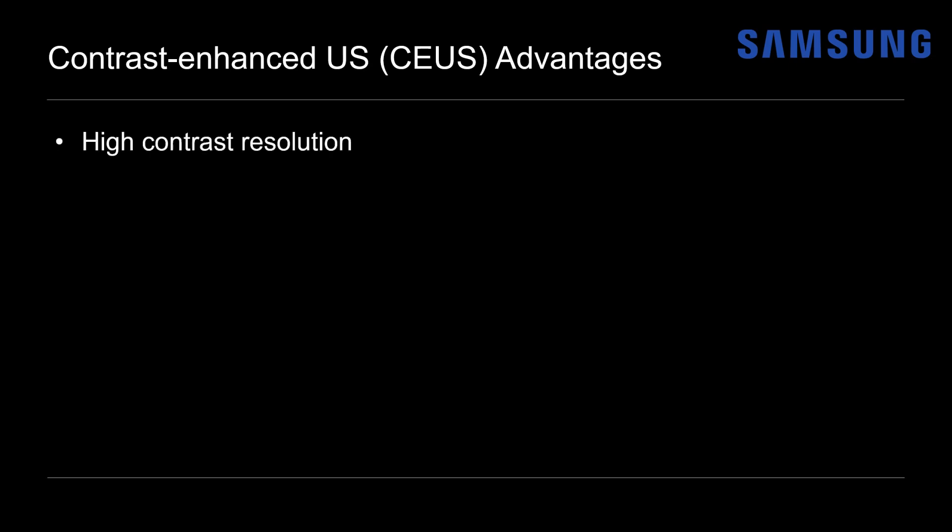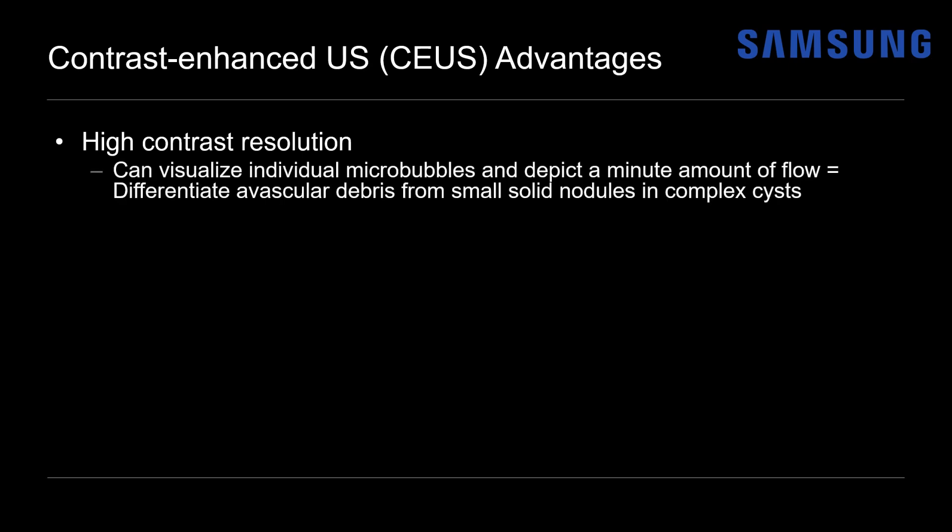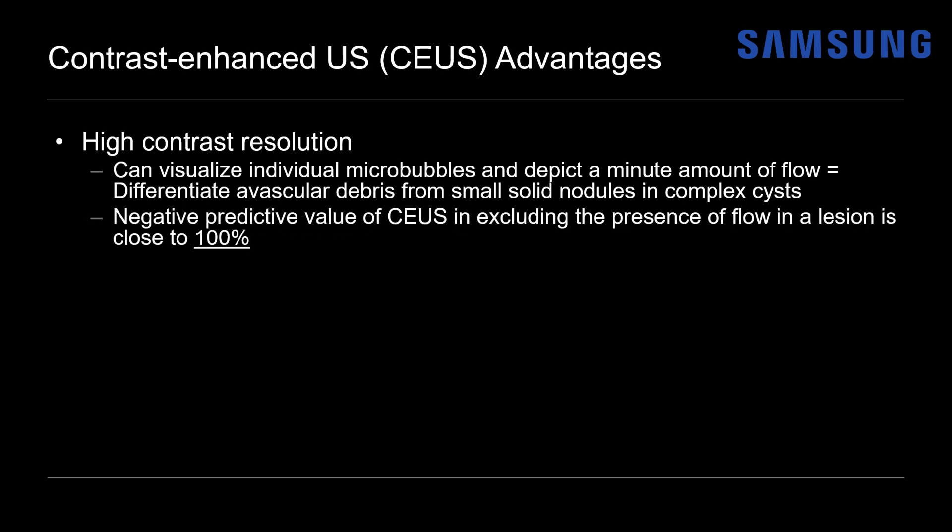What are the advantages of contrast ultrasound compared to CT and MRI? The contrast resolution is extremely high — you can actually visualize individual microbubbles and depict a minute amount of flow. That allows differentiation of avascular debris from small solid nodules and complex cysts. Also, the negative predictive value of contrast ultrasound is nearly 100% in excluding the presence of flow — if you don't see flow, it's very likely there is no vascularity.